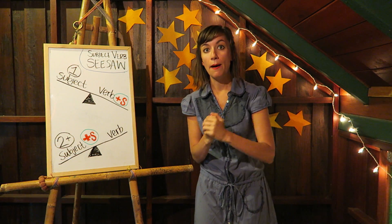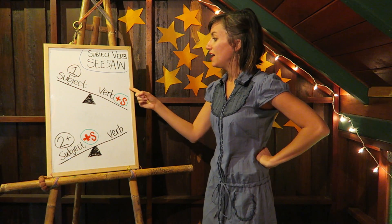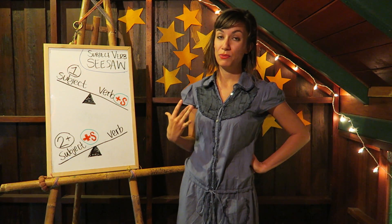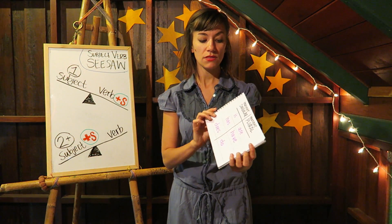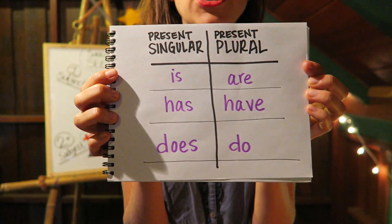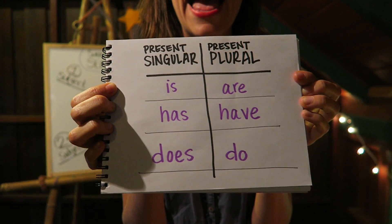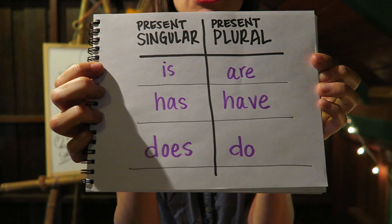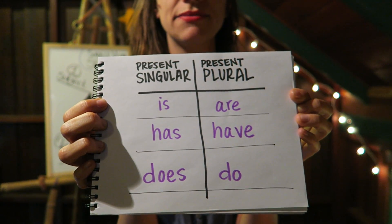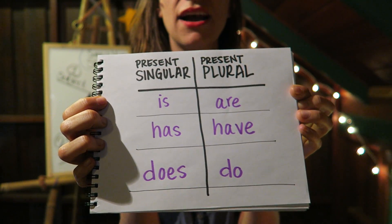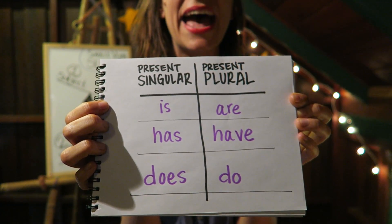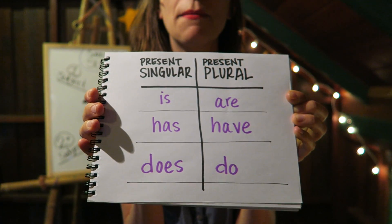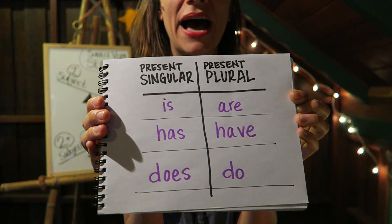Exception number two: you can't always simply add an S to make a verb plural — there are irregular verbs. Here are three common irregular verbs: is/are, has/have, does/do. 'The cat is smart, the cats are smart. The cat has a big brain, the cats have big brains. The cat does my homework, the cats do my homework.' Try to remember these irregular verbs.